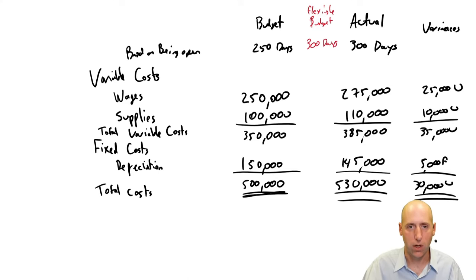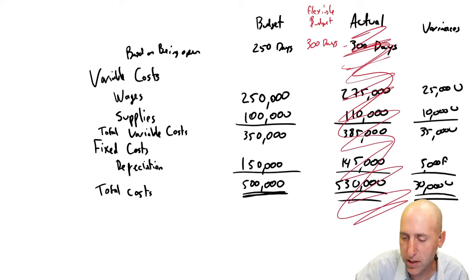What would I budget for? The truth is I wouldn't budget for $250,000 or $100,000 in wages or supplies. They're variable costs. They vary with the amount of days open and the amount of days worked. So I've got to make a new budget based on this flexible data. Let's see what we do. I ignore the actuals. I don't even look at the actuals. I just pretend I didn't know that, and I make a new budget based on 300 days.